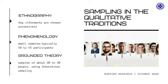There are similarities among the various qualitative traditions with regards to sampling. Samples are small, probability sampling is not used, and the final sampling decisions usually take place during data collection. However, there are also some differences. For ethnography, key informants are chosen purposively and guided by the ethnographer's informed judgments. Sampling in ethnography typically involves more than selecting informants because observation and other means of data collection play an important role in helping researchers understand a culture.